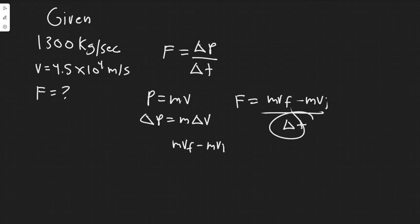Looking at what they give us, we know we have kilograms per second. So we have amount of mass per change in time. Notice that we get 1,300 kilograms would be the mass, and then the change in time would be one second because that's the ratio.